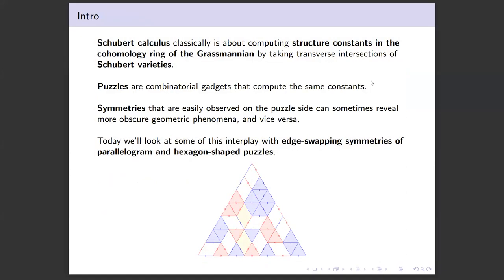This is about the interplay between the combinatorial puzzle method of doing Schubert calculus and the geometric perspective. Sometimes an observation or symmetry that's clear on one side, like the puzzle side, can show us something we didn't expect on the geometry side, and vice versa. We'll see some good examples of that with this project.